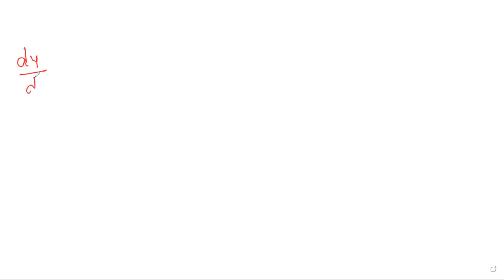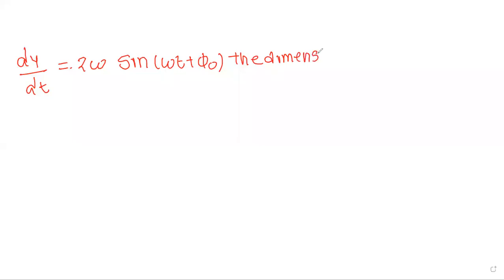Question 12: In the relation dy/dt = 2ω sin(ωt + φ₀), the dimensional formula of (ωt + φ₀) is: option 1 MLT, option 2 MLT⁰, option 3 ML⁰T⁰, option 4 M⁰L⁰T⁰. Anyone got it correct?